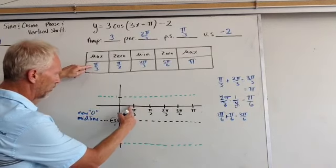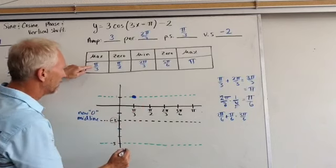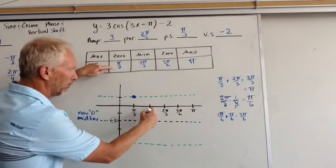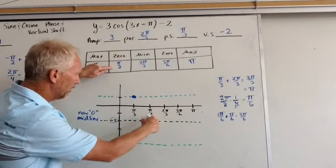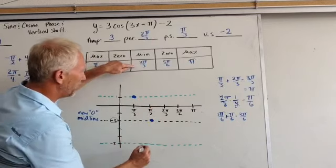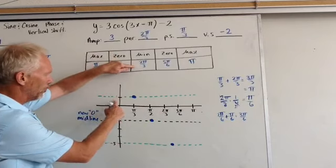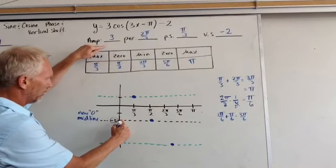Pi over 3, right here, was a max, so I'm going to go up here. Pi over 2 went down to 0, but be careful, it's not that 0, it's this new 0. 2 pi over 3 was a minimum all the way down here.